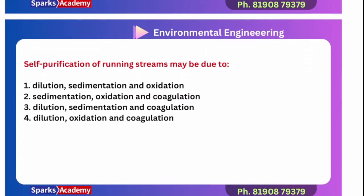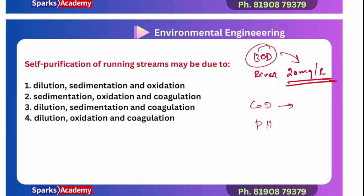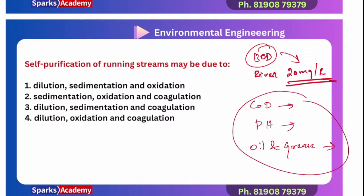This is all about the self-purification of a river. Additionally, regarding disposal standards: BOD limit is 20 mg/L for river disposal, and for sea disposal BOD can be up to 100 mg/L. Now a question for you: self-purification of a running stream may be due to — A) dilution, B) sedimentation, C) oxidation and sedimentation, D) dilution, sedimentation, and coagulation. Let us know your answer in the comment section.